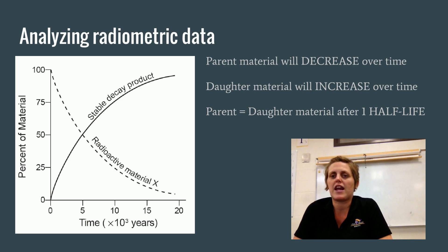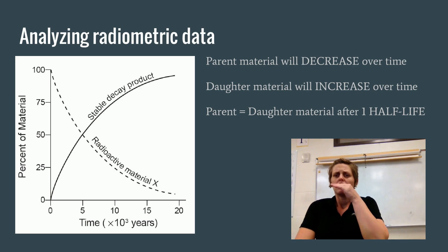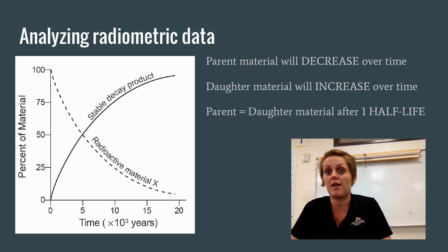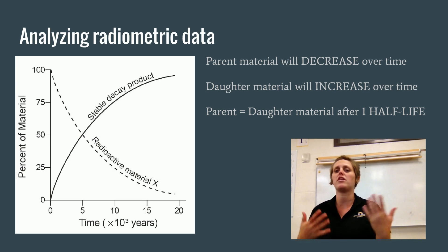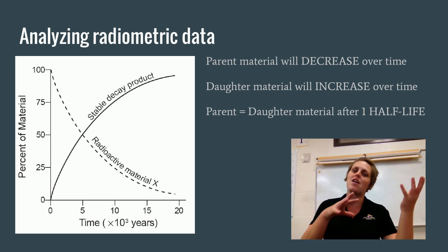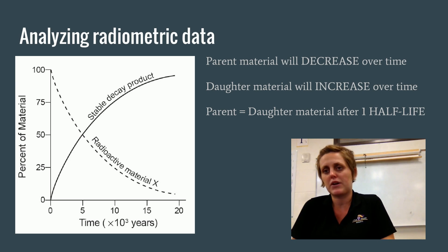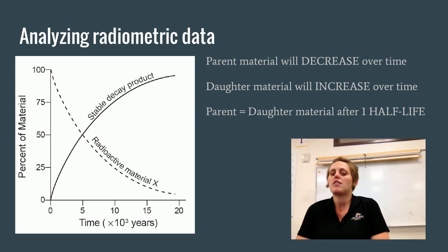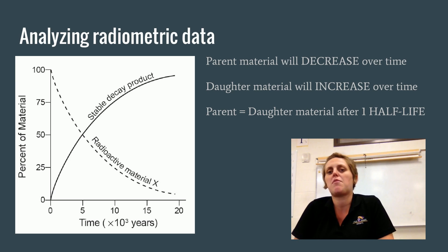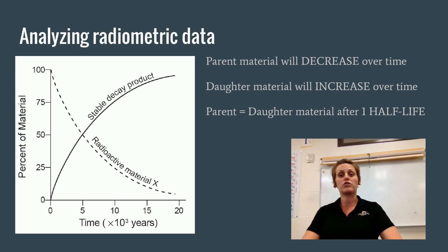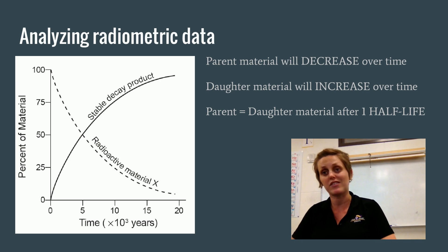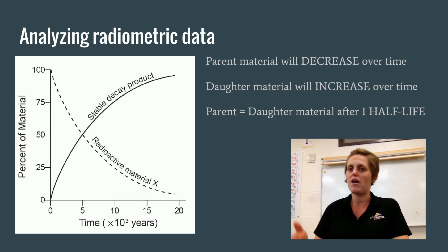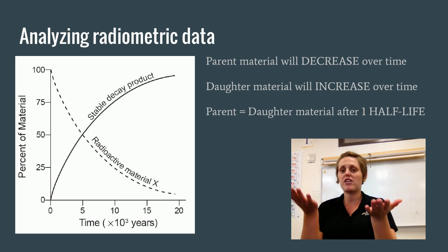To analyze your radiometric data, you have to understand that your parent material will decrease over time, and your daughter material will increase over time, because your parent material is decaying and becoming your daughter material. The law of conservation of matter says nothing can be created or destroyed, so that parent material has to become something — and it becomes that daughter material. Your parent material is going to equal your daughter material after one half-life, because that's when one half of your parent material became one half of the daughter material, and they're equal at that point.